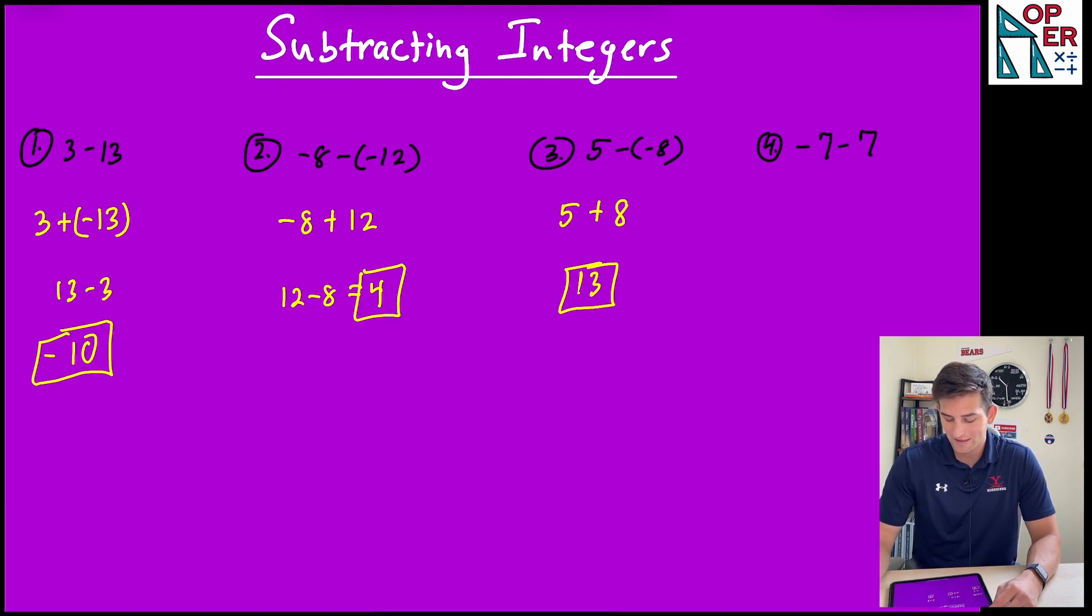And the last one, number four: negative 7 minus 7. So negative 7 plus negative 7 - we did the opposite of 7, right? So now we are adding the same sign. We can add 7 plus 7, and that would be 14. We're going to keep the sign - both of our 7s were initially negative, so our final answer would be negative 14.